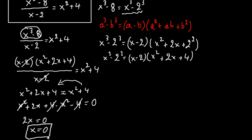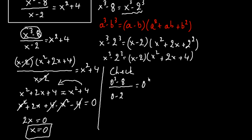Let's make a quick check. We write the fraction: 0 to the third minus 8, over 0 minus 2, equals 0 squared plus 4. This gives minus 8 over minus 2 equals 4. The two negatives give a positive, so 4 equals 4. So x equals 0 is the correct solution.